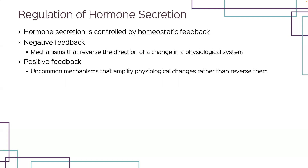Positive feedback mechanisms, which are more uncommon, will amplify changes rather than reverse them. Usually such amplification threatens homeostasis, but in some situations it can help the body maintain its stability. For example, during labor, muscle contractions that push the baby through the birth canal become stronger and stronger by means of a positive feedback mechanism that regulates secretion of the hormone oxytocin.